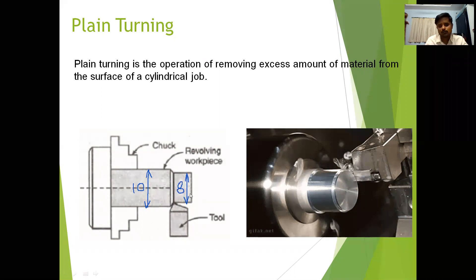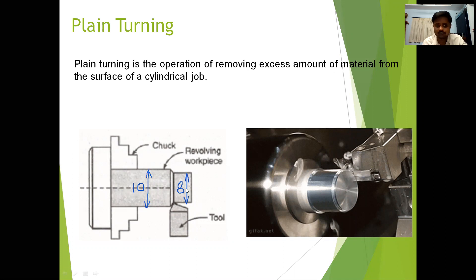So we are going to remove 2 mm of material from the surface of the workpiece. By removing the 2 mm, we are maintaining 8 mm of the finished object. This is about the plane turning operation.